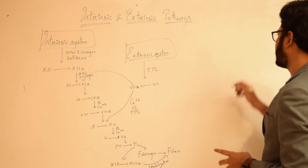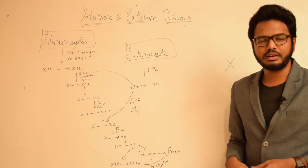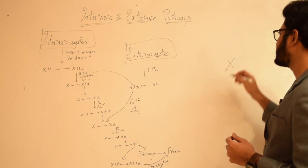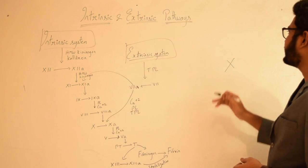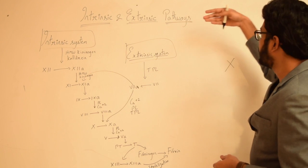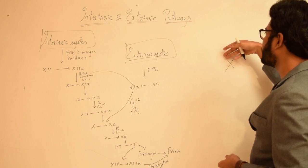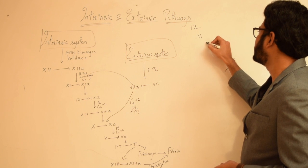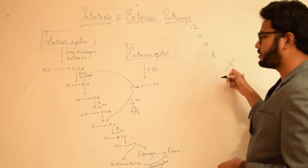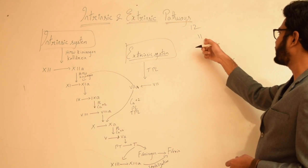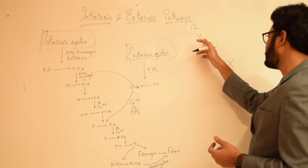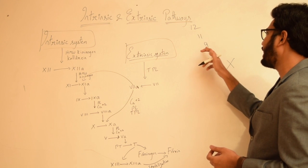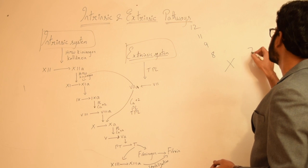First, write down 'X' — assume you are trying to hit a bullseye, so X is your target. This X represents factor 10. On the left side, write numbers from 12 to 8 in descending order, but exclude 10: so write 12, 11, 9, 8. Since you've already written 10 as the target, there's no need to repeat it. On the right side, write down 7.